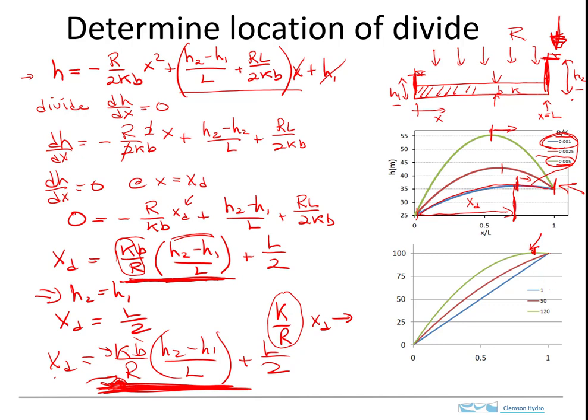You can see now that if there's no recharge at all, then we just get this linear. But if there's just a little bit of recharge compared to K, then we have this reddish curve. You can see that it's curved, but there's no divide, there's no place where the gradient is zero. The gradient is always in that direction.